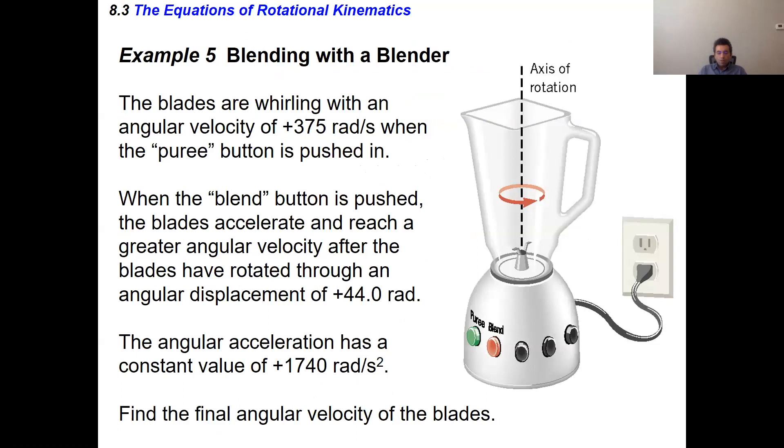This is the story of an old-school blender that only has two buttons: one says puree and one says blend. When the blades are going around at an angular velocity of 375 radians per second, that's when the puree button is in. But when the blend button is pushed, the blades accelerate and reach a greater angular velocity.